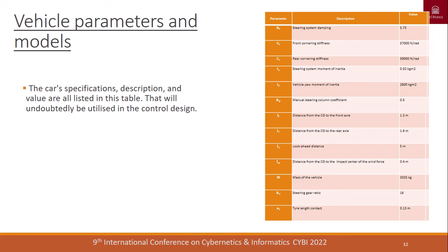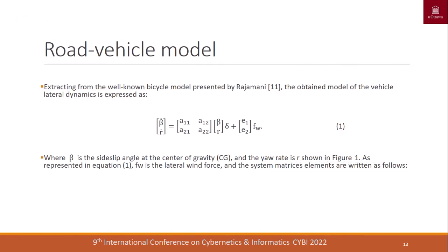In the vehicle parameters and models section, we present the car specifications and their values listed in the table. We present three fundamental models. First, the road vehicle model presented by Rajamani, which gives us the first state sigma (steering angle), beta (side-slip angle), and the yaw rate R. We apply the lateral force in this model as shown in figure one, and the matrices come from Newton's law.